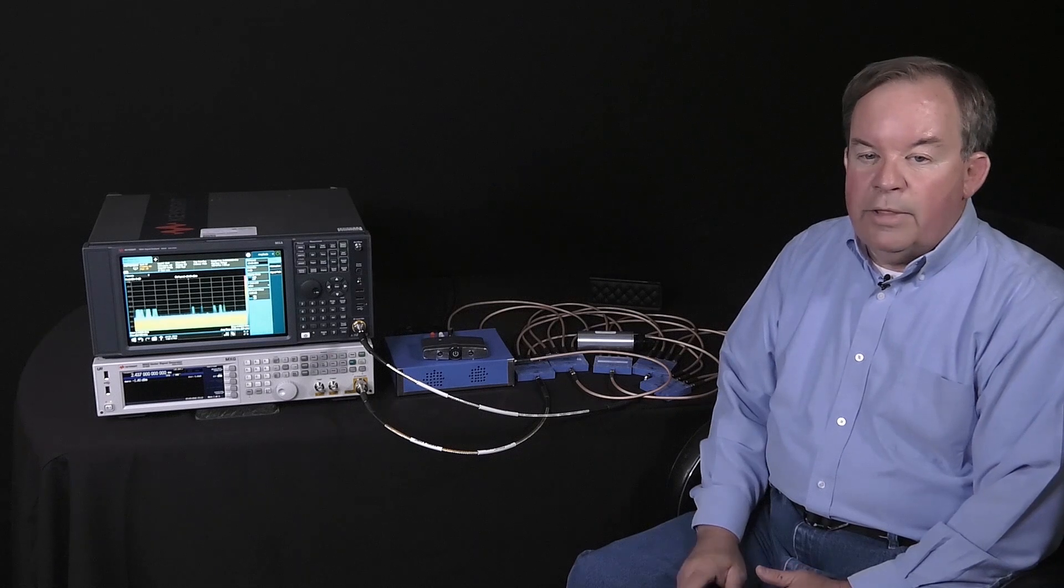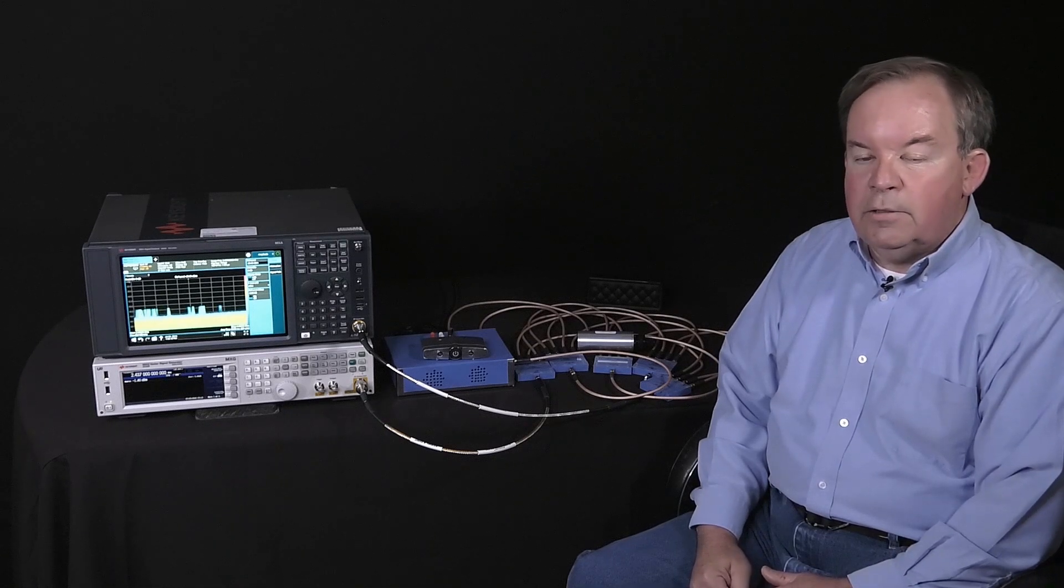The functional wireless performance in our case is going to be whether we can stream music continuously from a Bluetooth range extender to a Bluetooth speaker without interference. We're going to look for streaming music without dropouts. Our interfering signal is going to be a wireless LAN signal generated by the N5182 MXG signal generator. Together, the signal generator, the MXA, the MXG, and the test rig is going to show us how tolerant our device is of interfering signals.